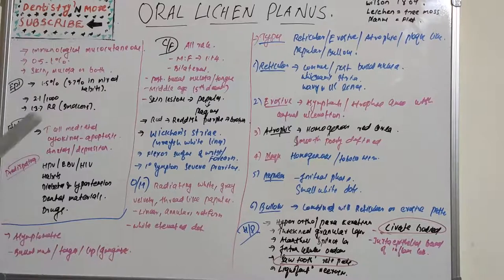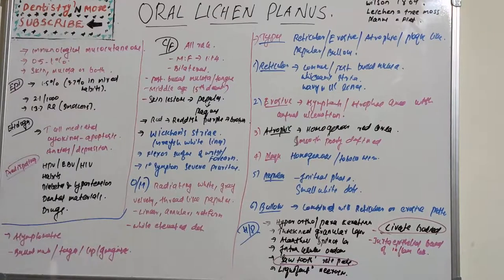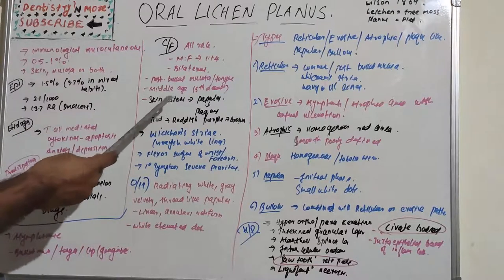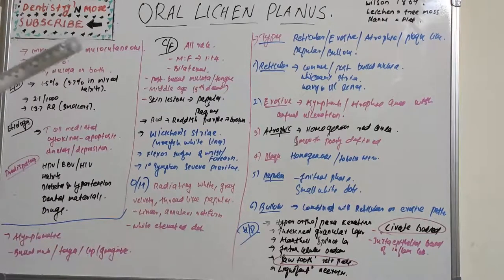Regarding clinical features, oral lichen planus affects all racial groups with a female to male predilection of 1.4 to 1. It affects the oral cavity in a bilateral fashion. Lesions usually involve the posterior buccal mucosa, or less commonly the tongue; palatal and sublingual lesions are very rare. It most commonly affects middle-aged or elderly people, with a mean age in the fifth decade. Prevalence is around 0.5 to 2.2 percent.